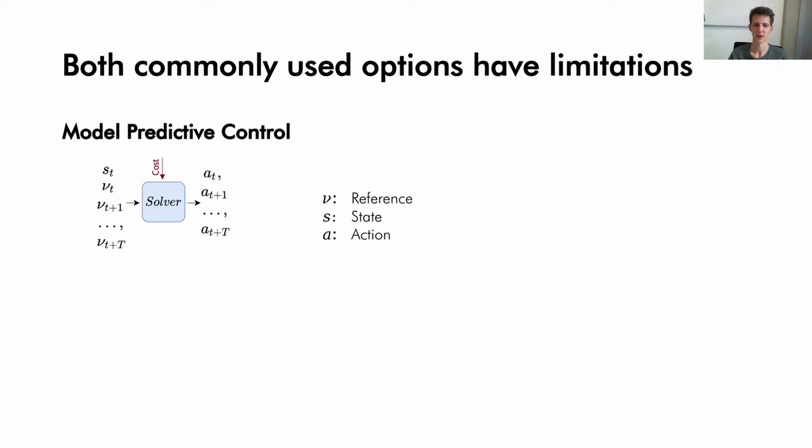Such control problems are generally solved with one of two approaches. On one side there is model predictive control, or MPC. Using MPC, we assume that the dynamics of the system are known and run an optimization online to determine the best action to take. This approach leads to good tracking performance but in turn requires expensive computation during deployment.